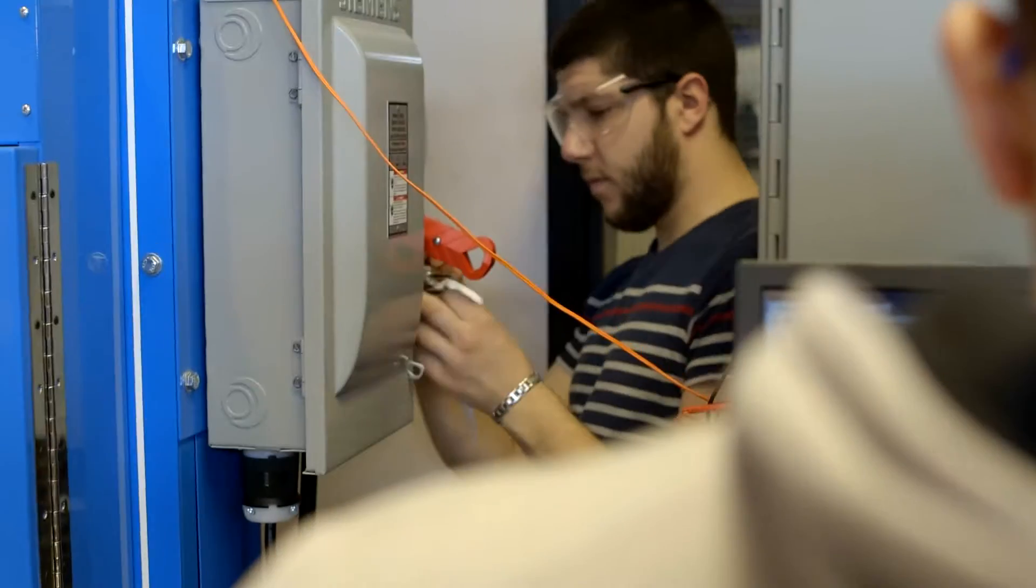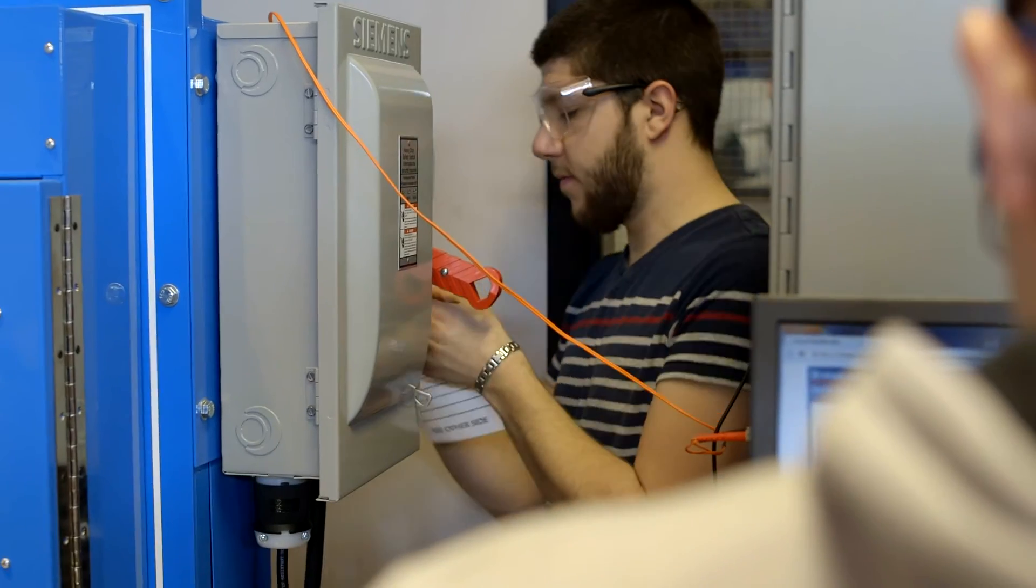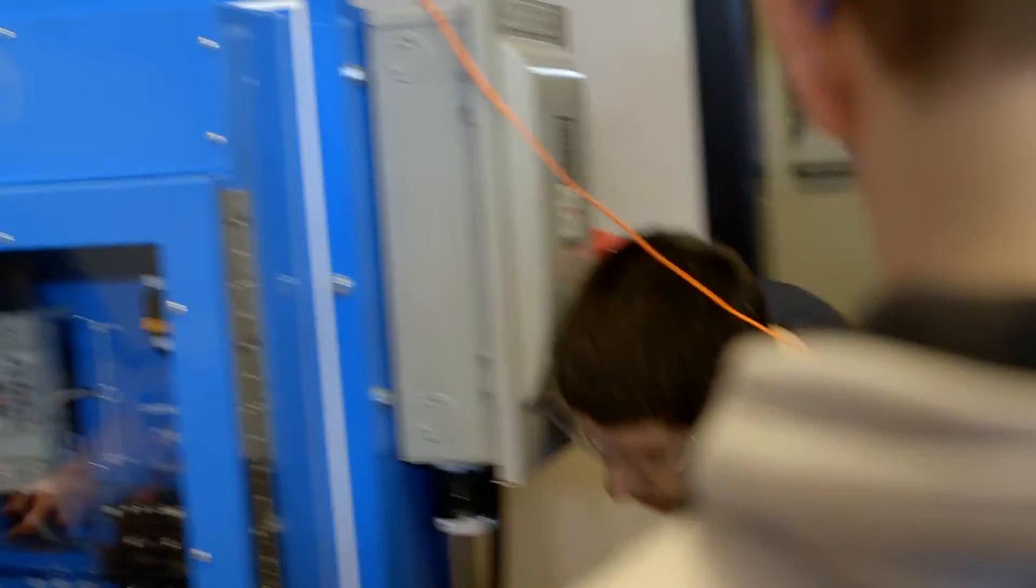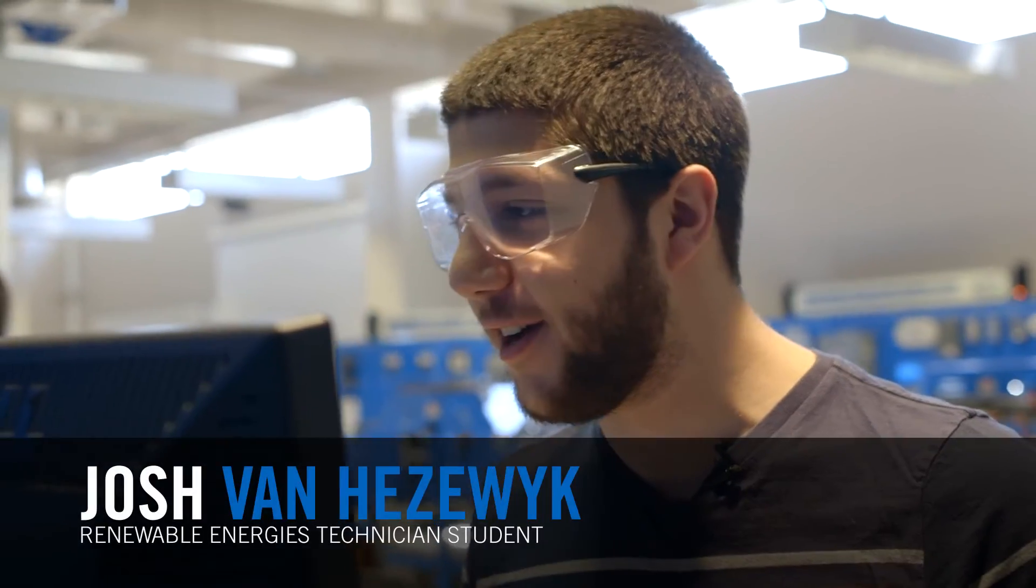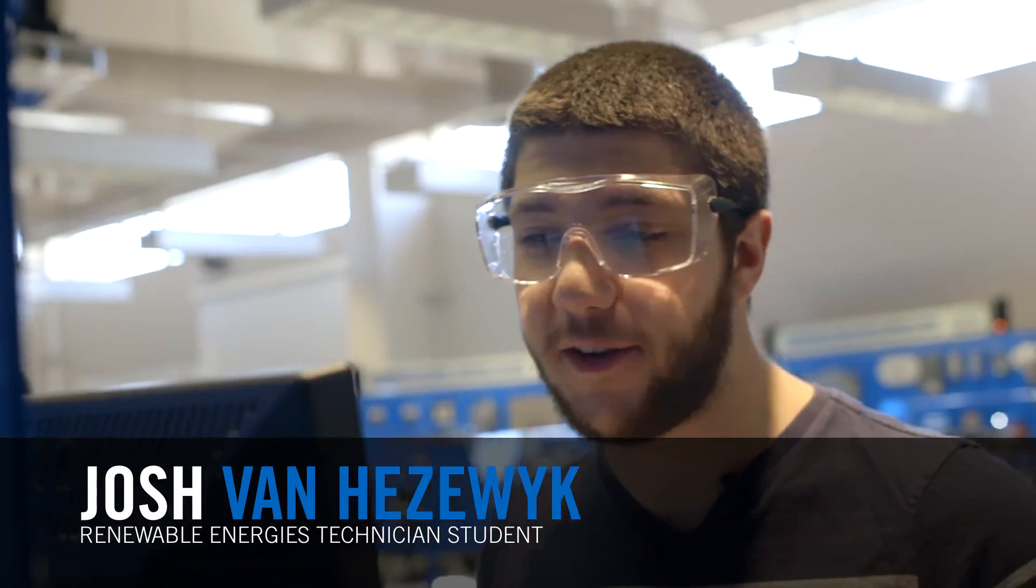The stuff that we're doing right now, the lab work and actually getting to use the equipment. Now we are testing voltage levels on a generator. This would be for a wind turbine and we're testing it to see if there's any faults.